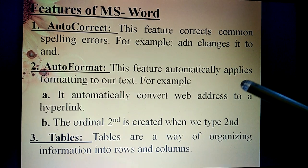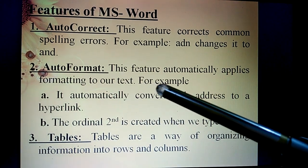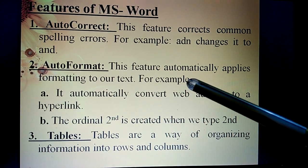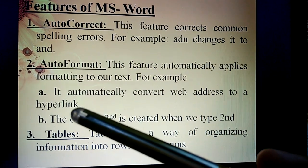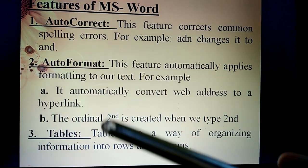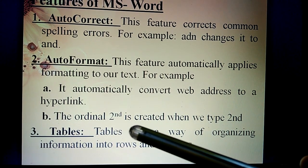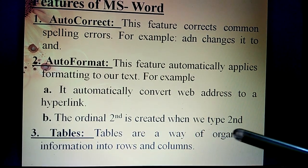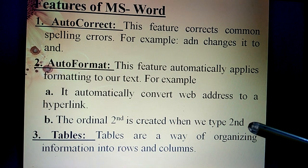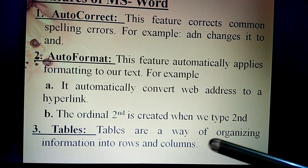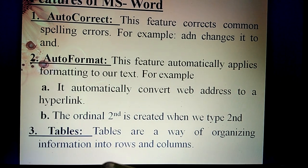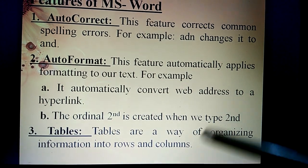Second, AutoFormat. This feature automatically applies formatting to our text. For example, it automatically converts a web address to a hyperlink. Third, Tables. Tables are a way of organizing information into rows and columns.